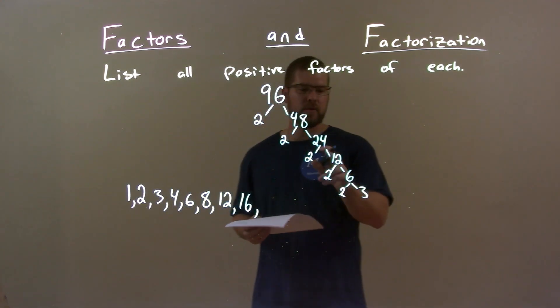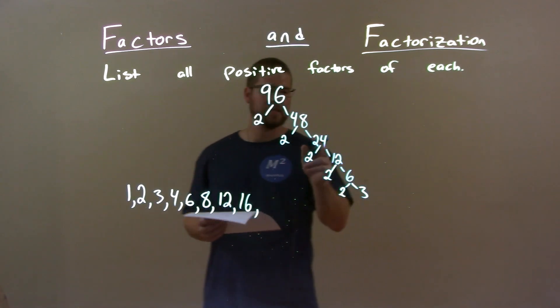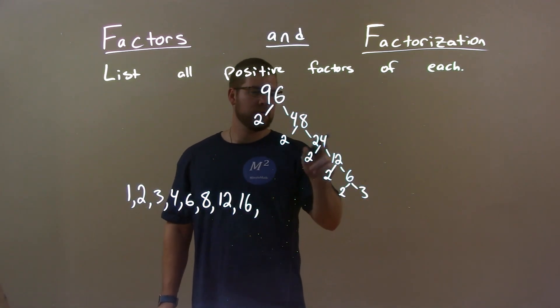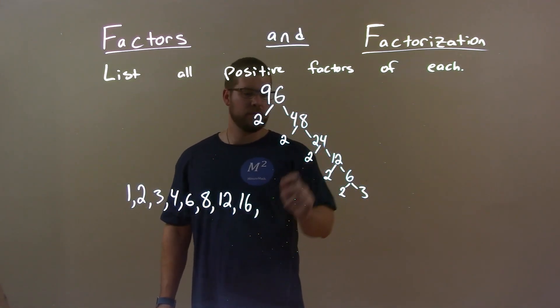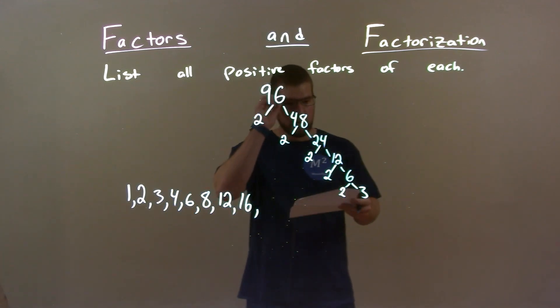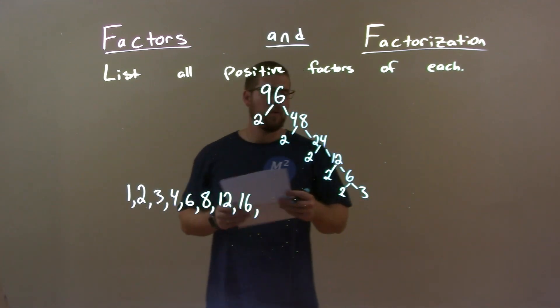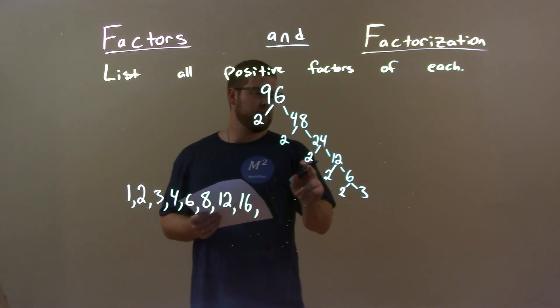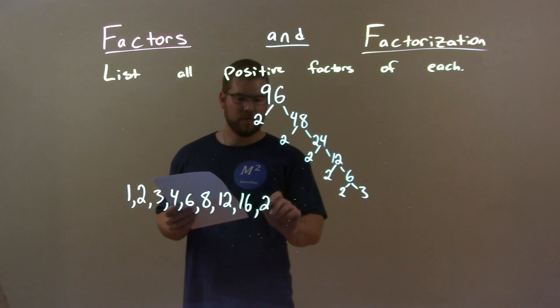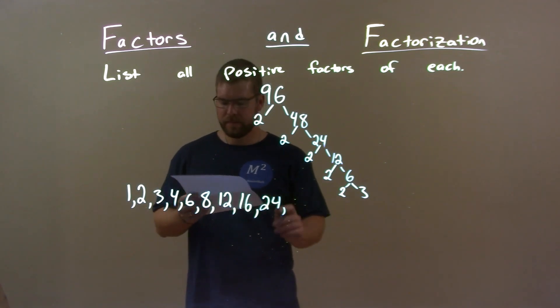Nothing really up till 24. 24 — 2 times 2 times 2 times 3 gives us 24. So we have 24 now.